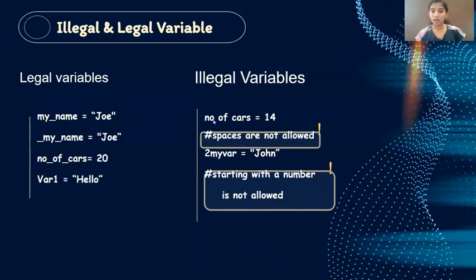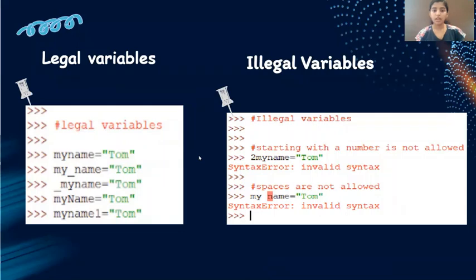And 2my, why is this an illegal variable? A variable can't start with number. As you see it is starting with a number so it is an illegal variable. There are a few more examples of legal variables and illegal variables here.